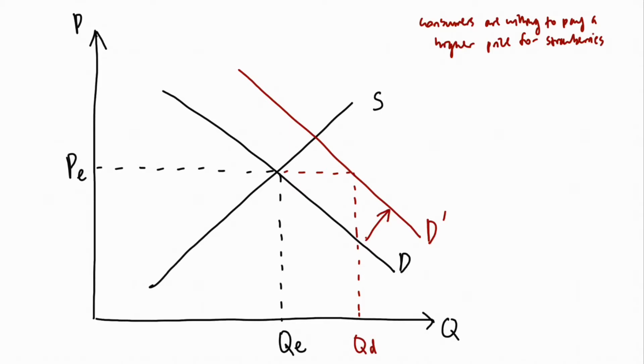However, producers are still only willing to produce QE units of strawberries at the original price and there arises a situation in which quantity demanded exceeds quantity supply. This is called excess demand which creates an upwards pressure on price shown by the higher price that consumers are willing to pay for strawberries.